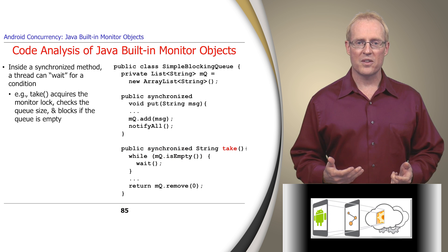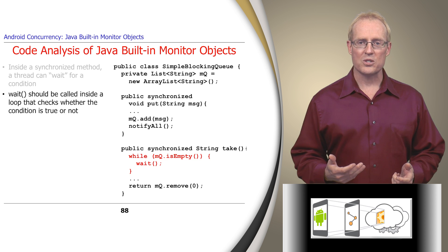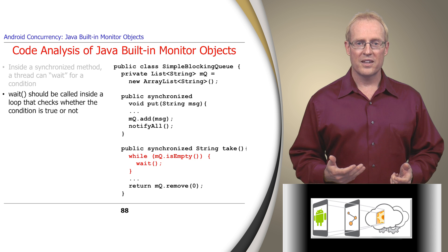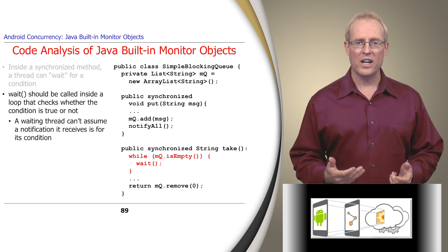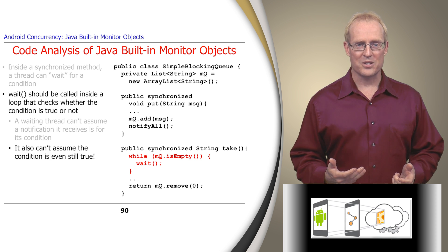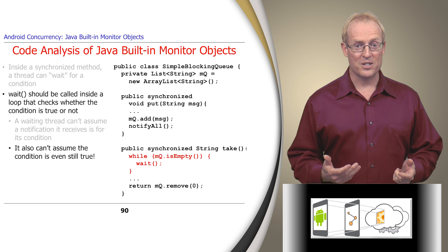For example, the synchronized take method implicitly acquires the monitor lock, checks the ArrayList MQ size, and blocks if it's empty. A call to wait should almost always be invoked inside a loop that tests for the condition being waited on. A loop is needed since a waiting thread can't assume that a notification it received was for the particular condition it's waiting on, nor can it assume the condition is still true due to the non-deterministic operations of other threads accessing the monitor object concurrently.